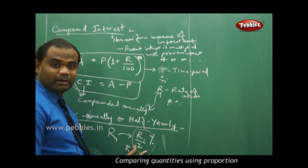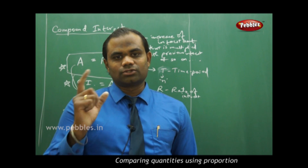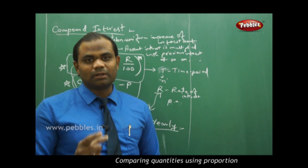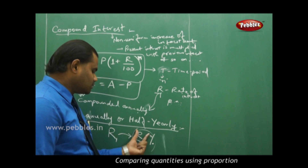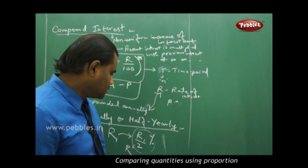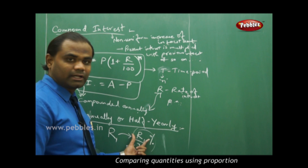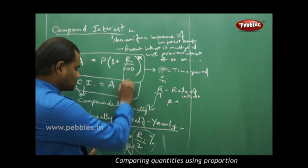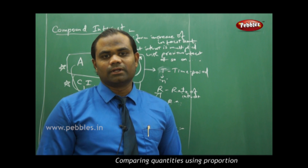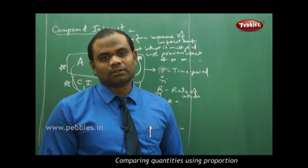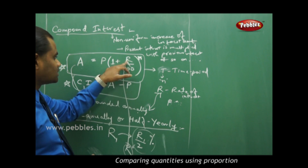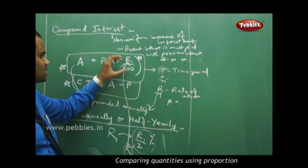For quarterly compounding, the rate is divided by 4. For monthly compounding, since 12 months make one year, the rate is divided by 12. So: compounding annually → use r; compounding semi-annually or half-yearly → use r/2; compounding quarterly → use r/4; compounding monthly → use r/12. Divide the given rate accordingly and substitute into the compound interest formula.